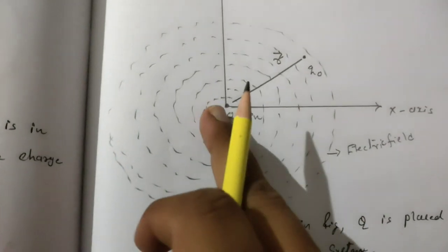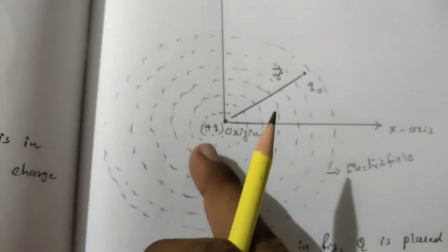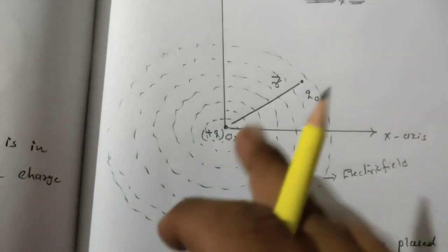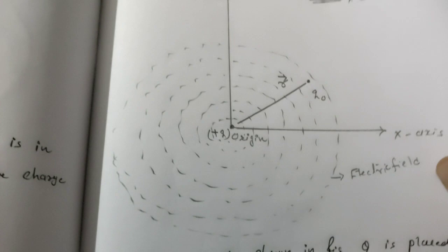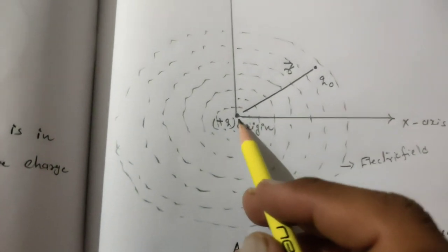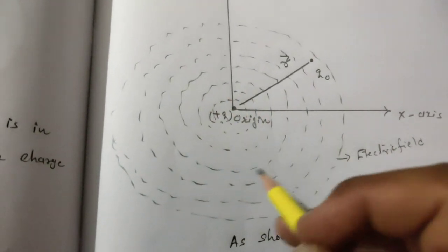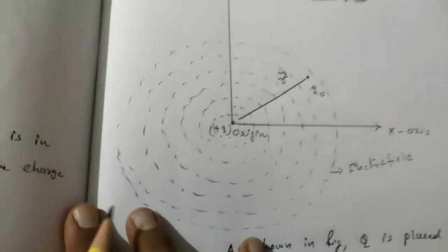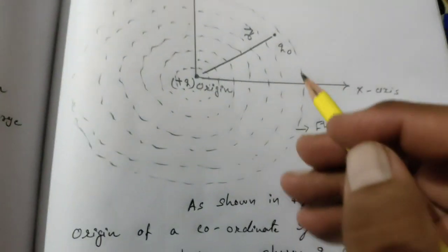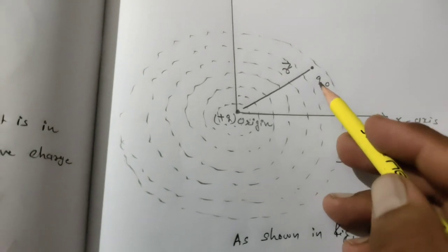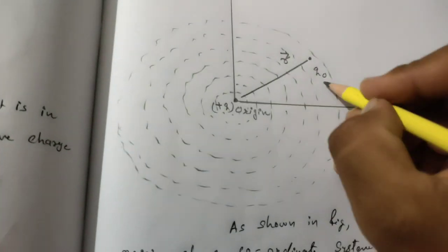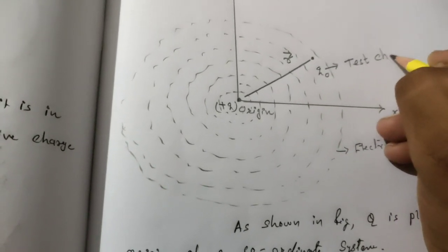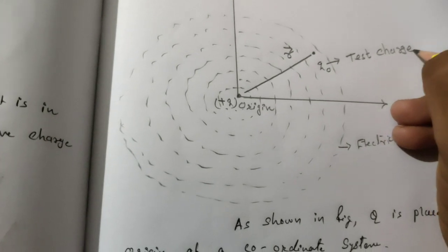Remember: electric field is always produced due to stationary charge particles. If the charge is in motion, the effect of electric field is less, so it is compulsory to keep it at rest. To find the intensity of electric field at a certain point, we bring one charge q0 — it is known as test charge, because by using this we are going to test the intensity of the field.